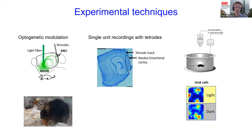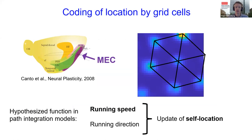All experiments I'm presenting today were performed in freely foraging mice that carried a light fiber for optogenetic manipulation of neurons in the medial septum, and tetrodes for multiple single-unit recordings and recording of local field potential activity in the medial entorhinal cortex.